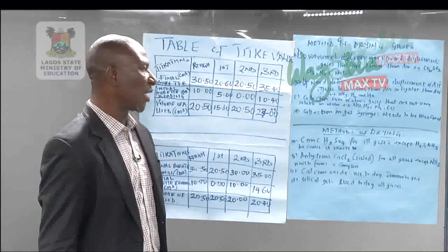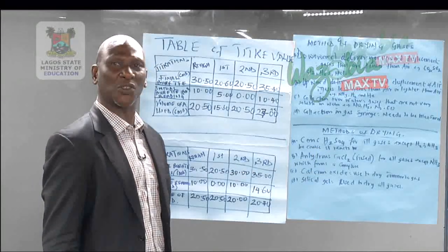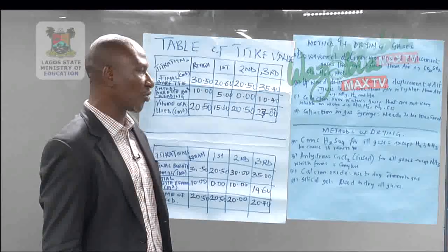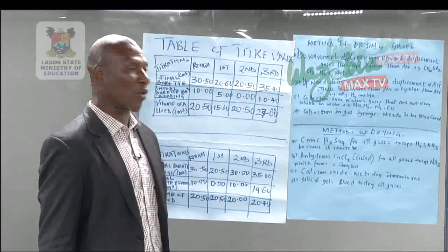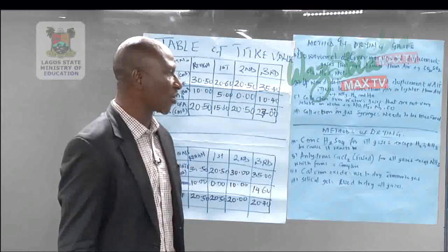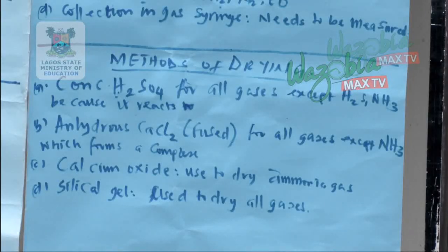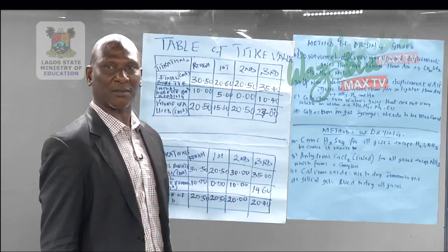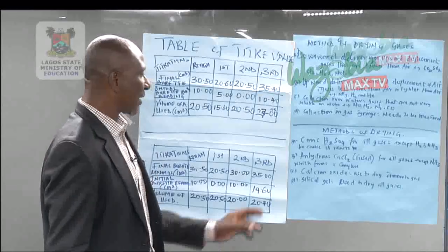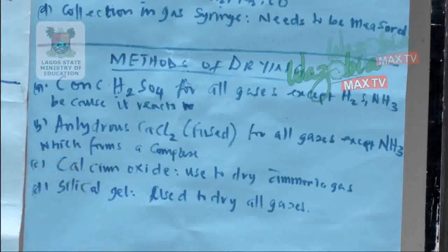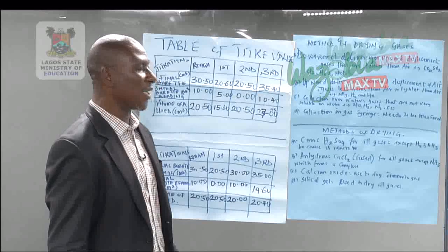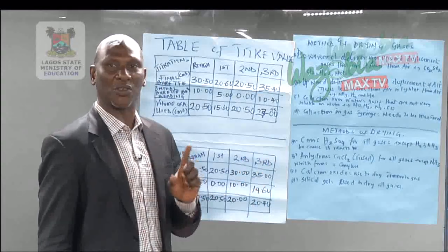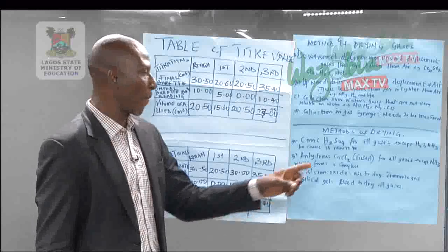Concentrated H2SO4, tetraoxosulphate-6-acid, is used to dry all gases, but it cannot dry hydrogen sulfide gas or ammonia, because it reacts with them. Then anhydrous calcium chloride — the fused anhydrous calcium chloride — can also be used to dry gases. It dries all gases, but it does not dry ammonia.